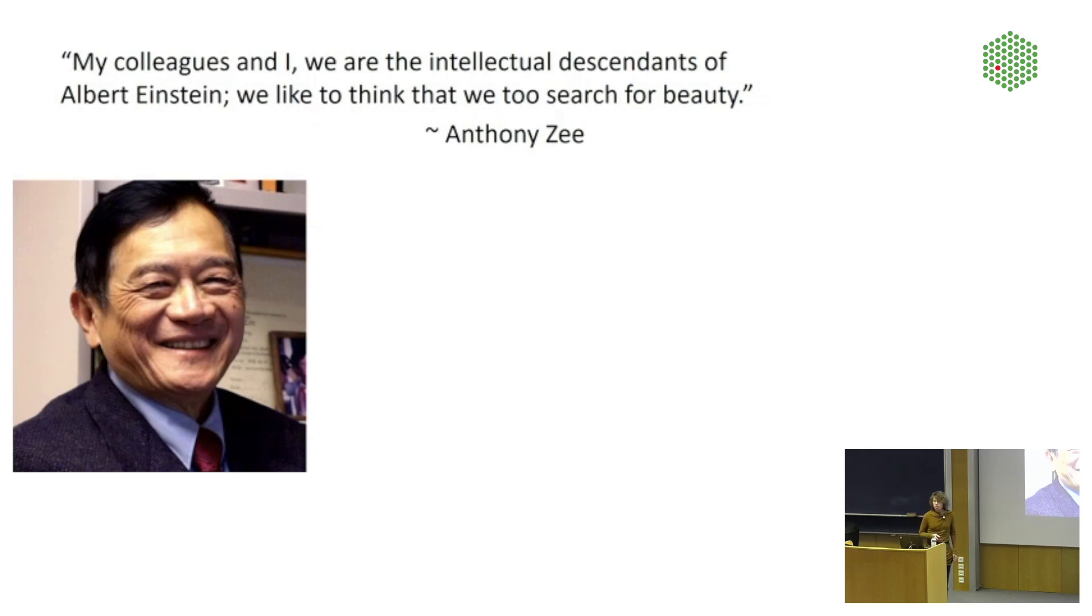So with that, I want to leave behind the realm of the already deceased and come to those who are still alive, starting with Anthony Zee, who is a professor for physics at the University of California in Santa Barbara. And in the 1980s, he wrote a book that's called something with symmetry, keep forgetting the title. And in this book he wrote, my colleagues and I, we are the intellectual descendants of Albert Einstein. We like to think that we too search for beauty. So this generation inherited this belief that beauty is a good guide to development of nature from those who had previously been successful.